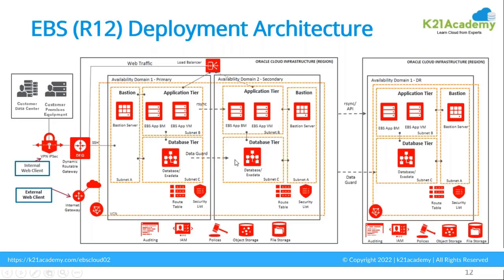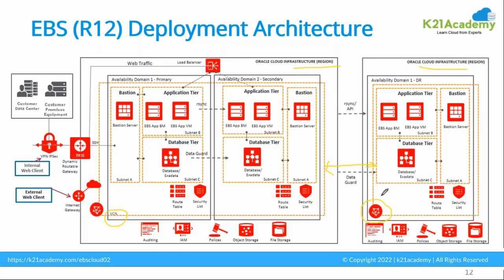This is basically doing the Data Guard — the secondary database — and further across the region. If you see across the region, this is going to be my one network. Let me use the drawing tools here. So this is going to be my one VCN and this is going to be another VCN. There is basically a communication between the two networks. To make the communication between two networks within two different regions, we need to have VCN peering done. That is where the peering concept comes into picture.